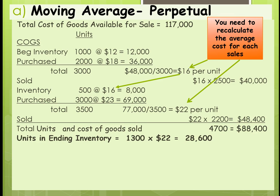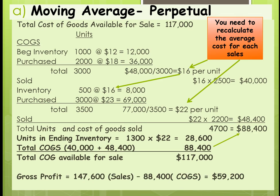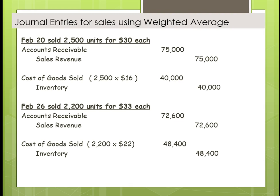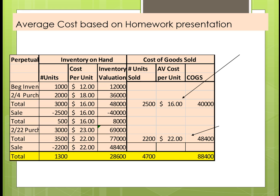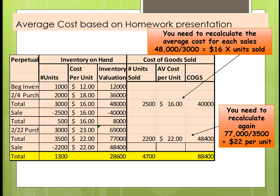Our units in ending inventory are going to be 1,300 times $22, and that's what we would start with for next month. We add that to our cost of goods sold and again we get our $117,000. Our gross profit minus cost of goods sold gives us a gross profit of $59,200. For the journal entries, when you make the sale, you're going to have a new cost every time because you've got to use average costing. The average cost you end up with carries forward as the value of your ending inventory per unit when you start the next month.